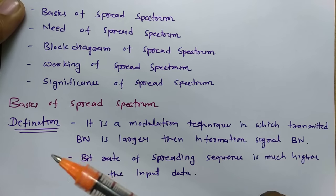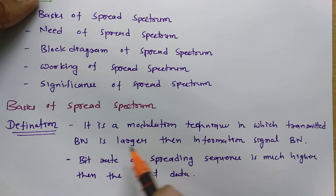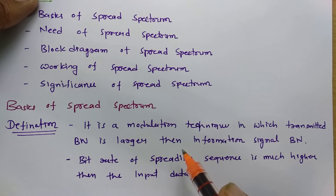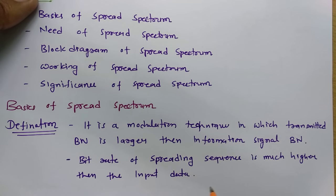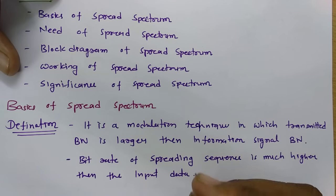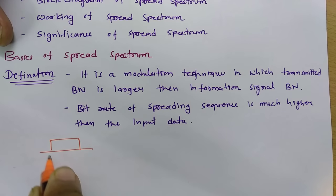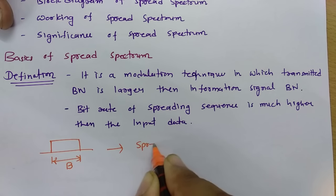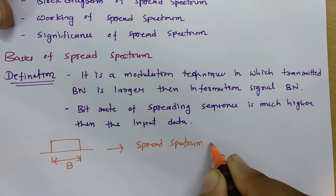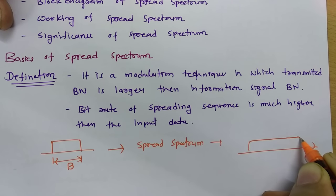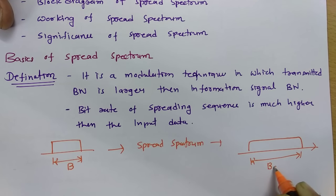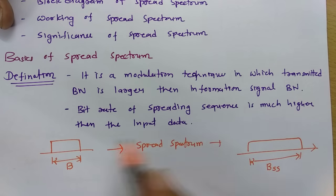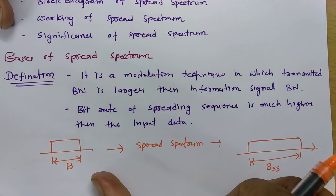Let us have the definition first. Spread spectrum is a modulation technique in which the transmitted bandwidth is larger than the information signal bandwidth. So whatever signal we are sending has a larger bandwidth than the original information bandwidth. If I have a signal with bandwidth B, after passing through spread spectrum, the new bandwidth referred to as B_SS is much higher.